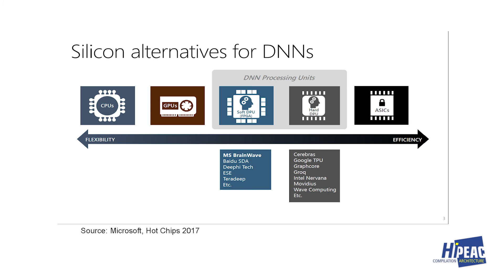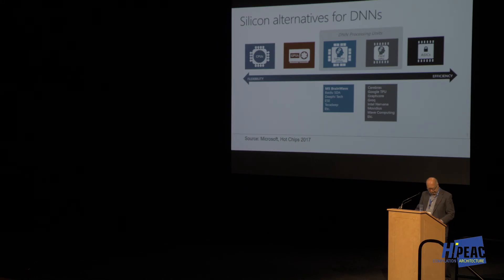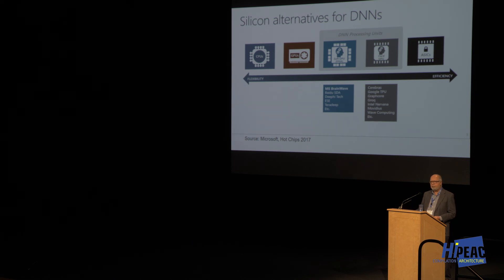There are two flavors of DPUs: soft DPUs built on FPGAs — with examples from Microsoft presented at Hot Chips — and hard DPUs from a lot of startups. Graphcore is here in the UK; Groq is a startup formed by people who left Google after working on the TPU; Intel is doing it too. Most of these are focused on training, and some on inference. There are fewer systems for training because you train once, whereas inference happens continuously, so the volume on the inference side is much higher.